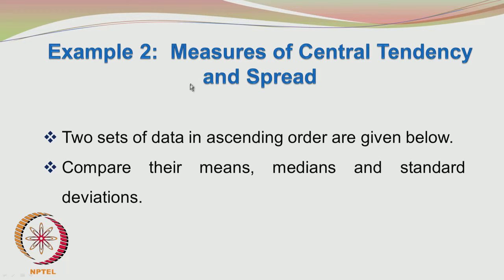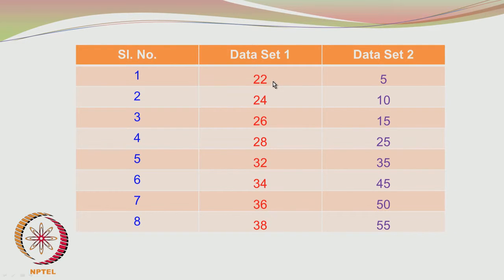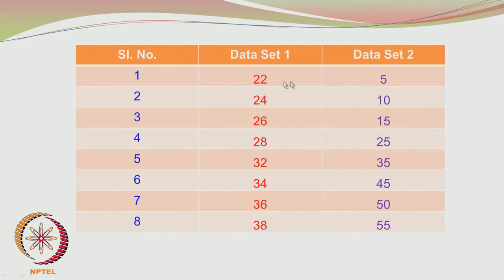Now we look at the measures of central tendency and spread. You have 2 sets of data in ascending order and you have to compare their mean values, medians, and standard deviations. The data points in set 1 are ranging from 22 to 38, so the range is 16. In set 2, the data values range from 5 to 55, so the range is 50 — you can immediately see this is a wider spread of data points.